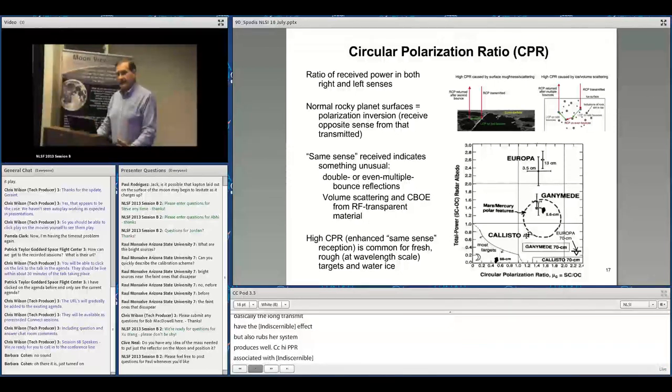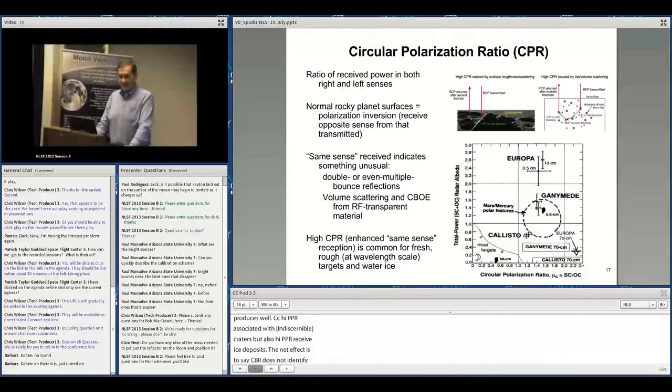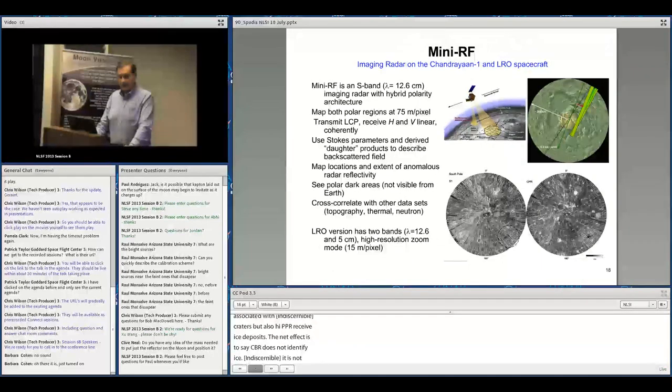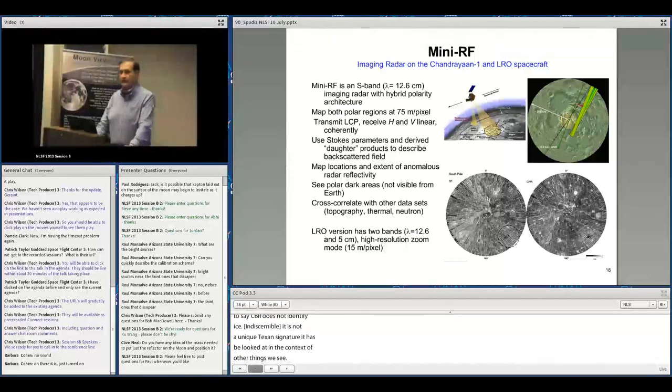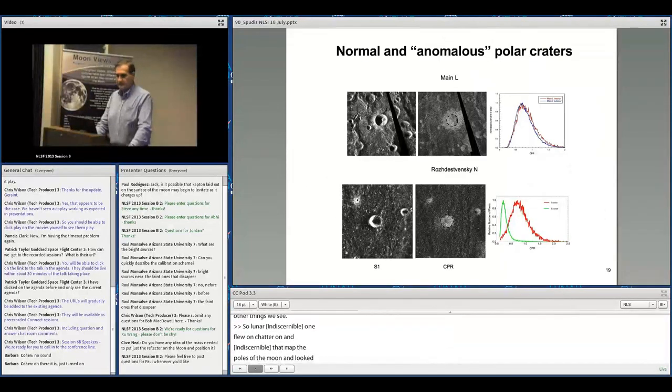CPR doesn't uniquely identify ice—this has been the source of controversy about radar results. It's not a unique detection signature and must be looked at in context. Mini-RF flew on Chandrayaan and LRO—an S-band side-looking radar that mapped the poles looking for high CPR signatures associated with polar craters.